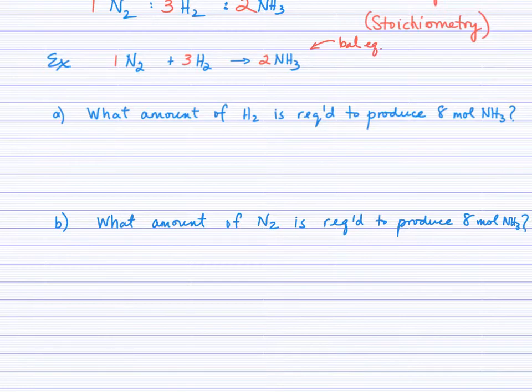Next, list the given. The problem states 8 moles of NH₃, so I find NH₃ in the equation and list the value with the unit. The required is the amount of H₂. Using the factor label method as always.